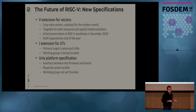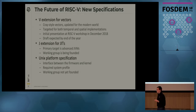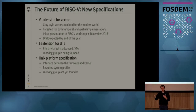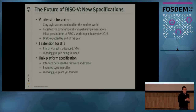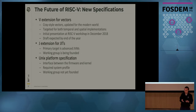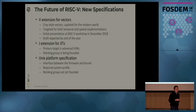In addition to new software ports, the RISC-V Foundation is also working on new specifications. One particularly interesting one is the V extension — an advanced vector extension based on a Cray-style vector, updated for the modern world. It's targeted for both spatial and temporal vector machines, with the goal of having a single ISA that can execute across all classes of machines. There was a presentation about this at the RISC-V workshop in December 2017, and a draft is expected by the end of the year.